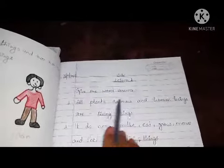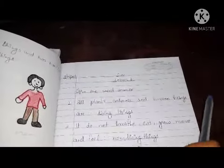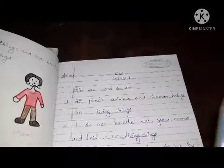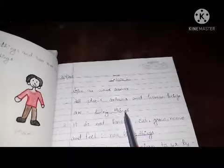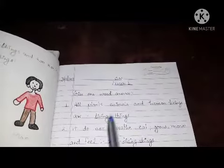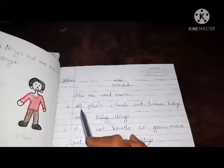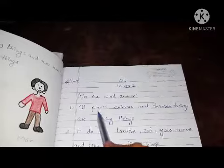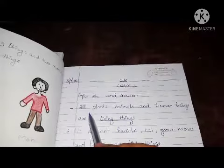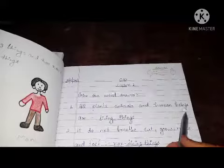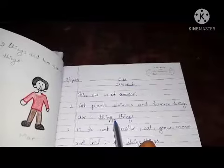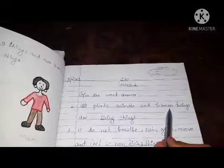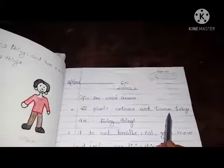Give one word answer is when I give some statements, you have to write only one word answer. So this is that type of exercise. So all plants, animals and human beings are what? Living things.